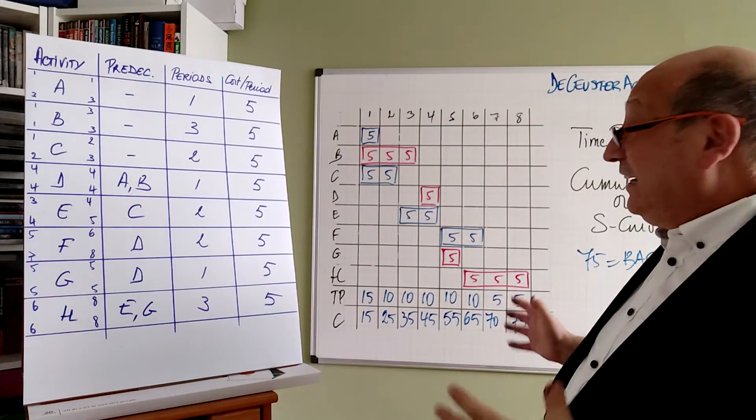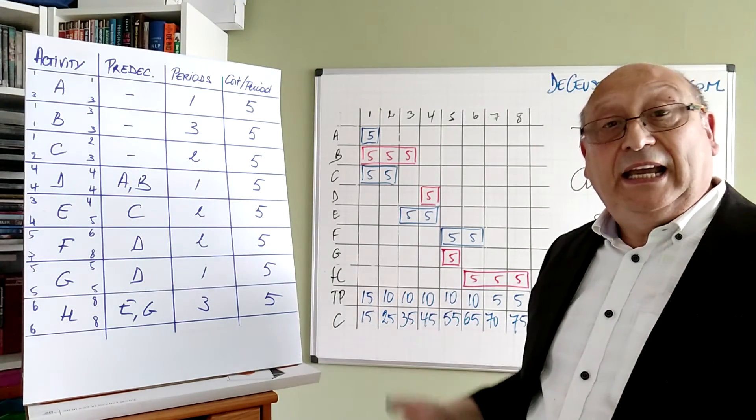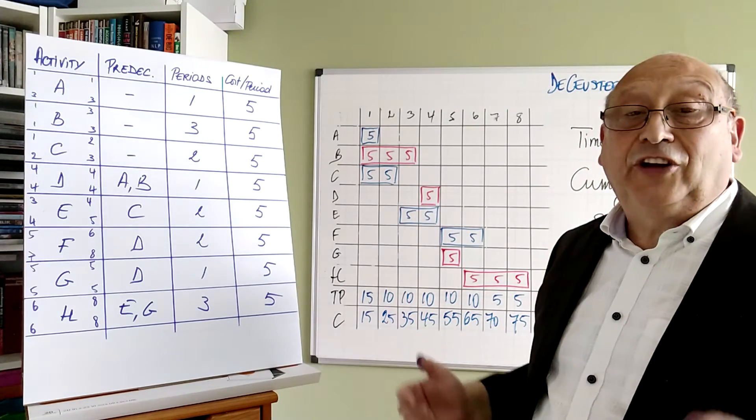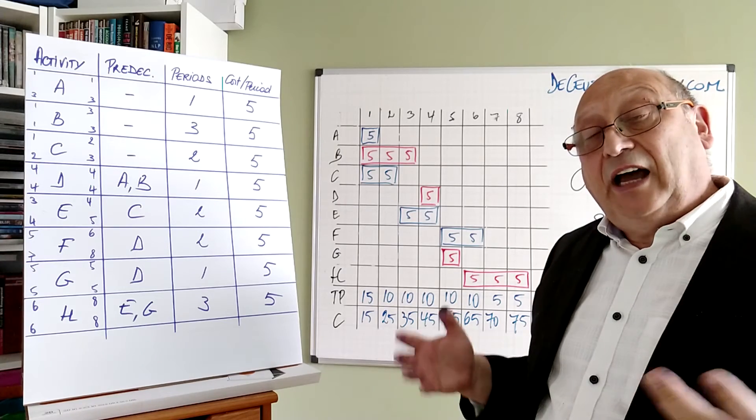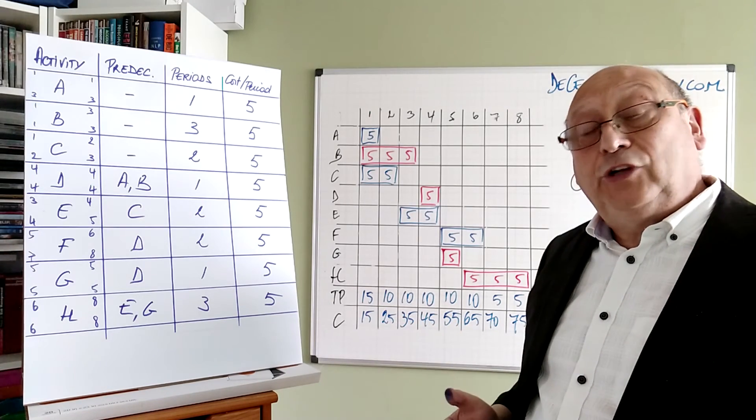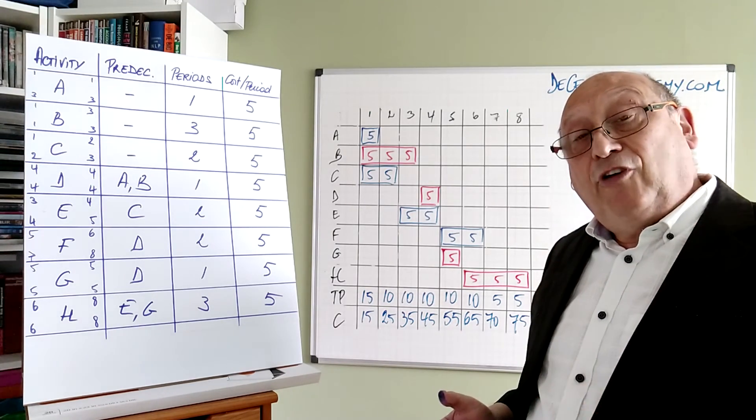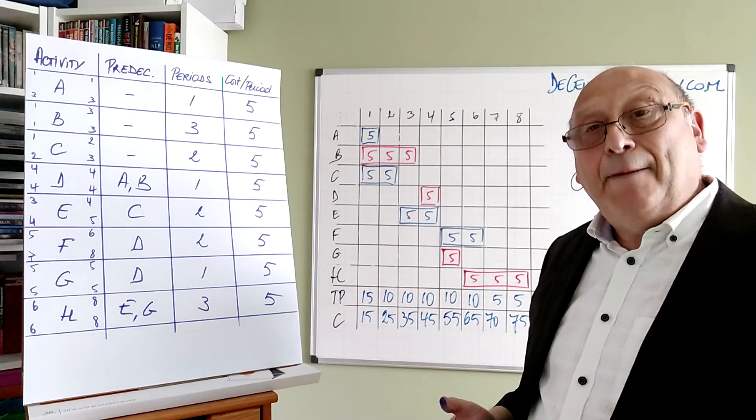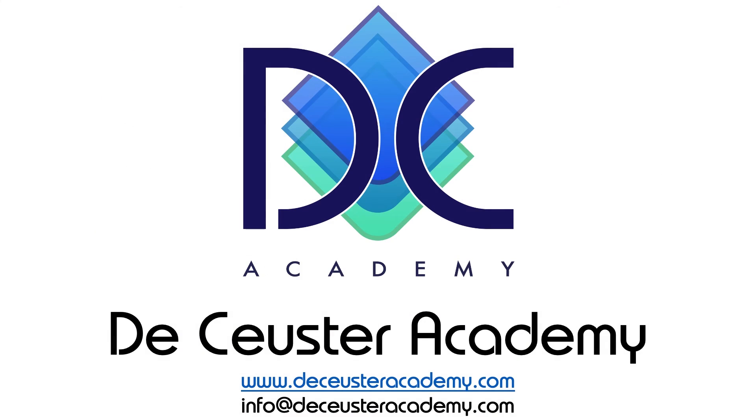So that's how we make the Gantt chart, how we put in the project budget. This was another calculation example. I hope you liked it and I hope it clarified what you did before. I'm looking forward to seeing you in the next presentations. Thank you and bye-bye.